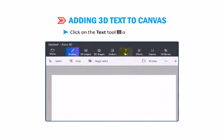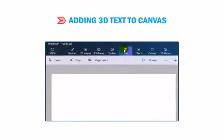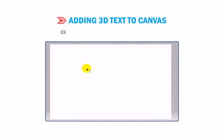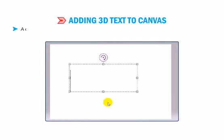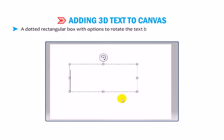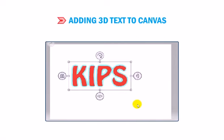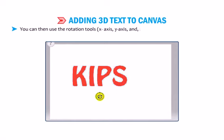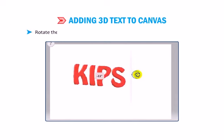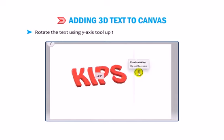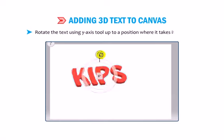Click on the Text tool on the top menu. The pointer changes to a sign. Click and drag the text box on the canvas area. A dotted rectangular box with options to rotate the text box will appear with a blinking cursor inside it. Type the text as shown in the text box. You can then use the Rotation tools — X-axis, Y-axis and Z-axis — to change and convert the text into 3D. Rotate the text using the Y-axis tool up to a position where it takes its 3D form.